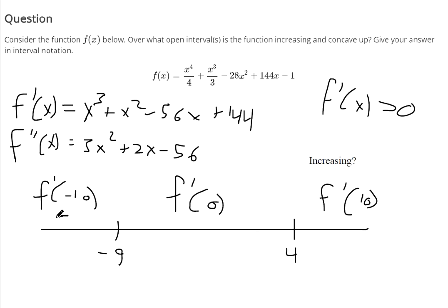We got a negative value. So it's decreasing to the left of negative 9. If you plug in 0 into the first derivative, you get a positive value. So it's increasing.